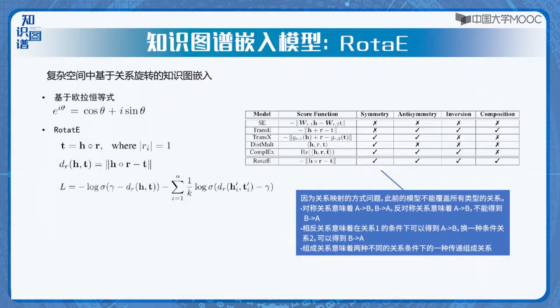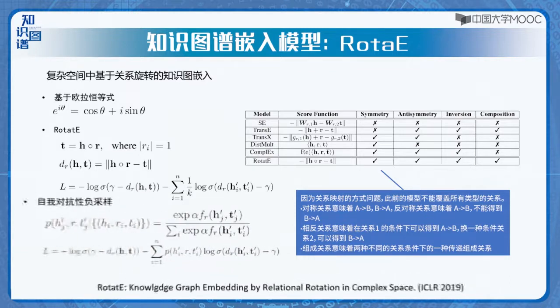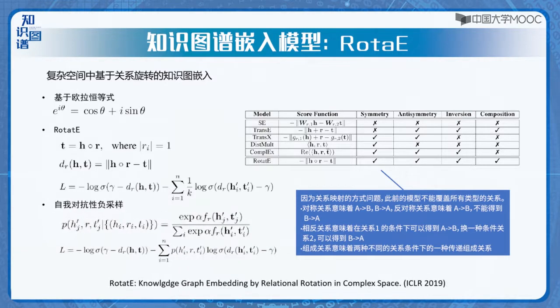这种旋转只影响在复数向量空间内实体嵌入的相位。作者证明这种简单的旋转方式可以构建上述所有形式的关系。此外，还提出一种新的负采样方式——自我对抗性负采样方式，能够更好地训练RotatE模型。